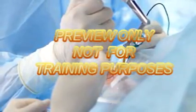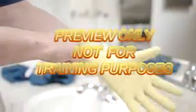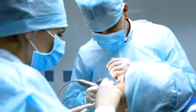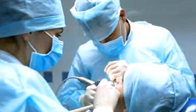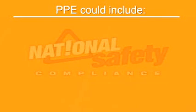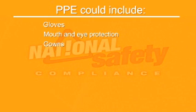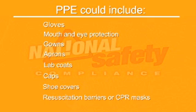PPE should be selected based upon the type of expected exposure you are facing. If contact with or splatter from a potentially infectious material is reasonably anticipated, then PPE should be worn on the areas of your body that are potentially exposed. It is especially important to cover mucous membranes, skin abrasions or cuts, and your hands. PPE could include gloves, mouth and eye protection, gowns, aprons, lab coats, caps, shoe covers, resuscitation barriers, or CPR masks.